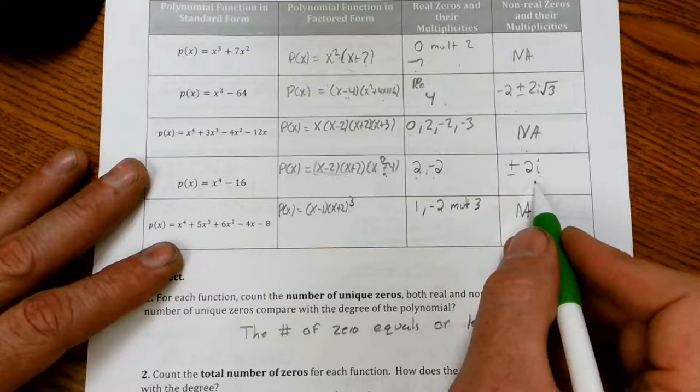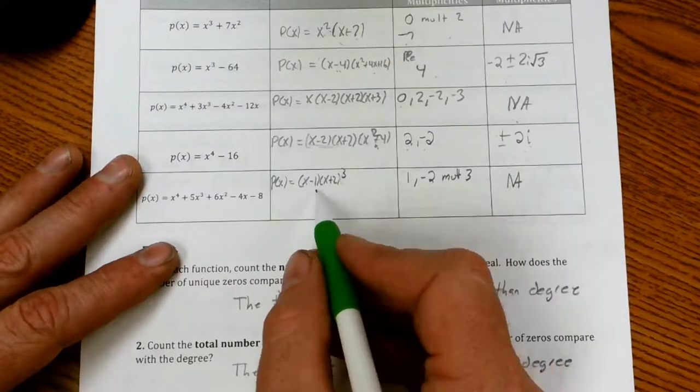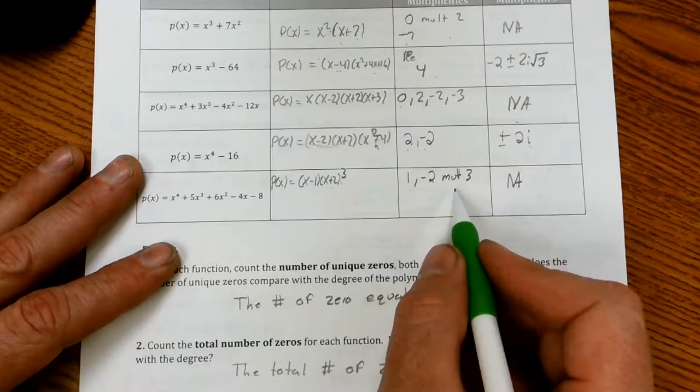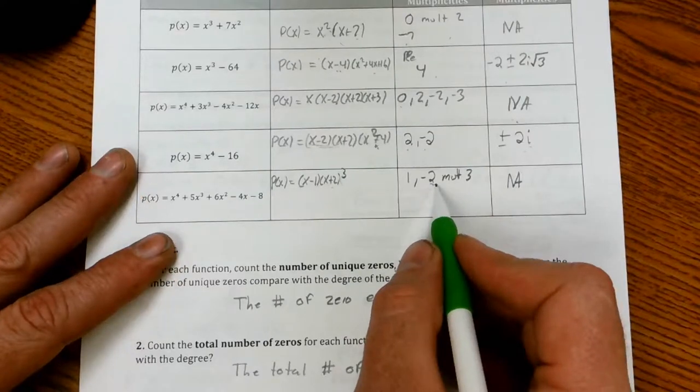And then here we had negative two with a multiplicity of three, so there are actually three zeros at negative two. We saw it on the graph and then we see it here. That's a multiplicity of three and then a positive one. If you want to pause a little bit and write this down, shouldn't take too long.